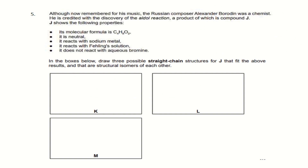Question 5, the last one for Tutorial 8. Compound J has molecular formula C4H8O2 and is neutral, meaning it cannot be a carboxylic acid (COOH). It reacts with sodium metal (must have OH), reacts with Fehling's solution (must be an aldehyde, CHO), and does not react with aqueous bromine (no C=C double bond). Three possible straight chain isomers K, L, M are required.